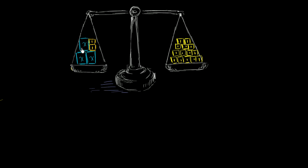Let's think about what we have on the left side. We have three masses with mass x, so we have 3x over here. And then we have two masses of one kilogram, so that's plus two. The total mass on the left hand side is 3x plus 2 — three masses with mass x, plus 2 kilograms.